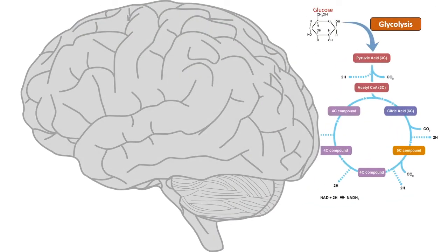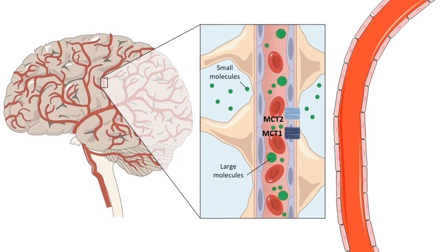Let's look at the brain. Under normal circumstances in the fed state, the brain can use glucose — from glucose, under glycolysis, it would form pyruvic acid, then the Krebs cycle can go on and the brain can get its energy. But the brain doesn't care where the acetyl-CoA comes from; acetyl-CoA is required for the Krebs cycle to go on. The brain can either take it from glucose or in the form of ketone bodies.